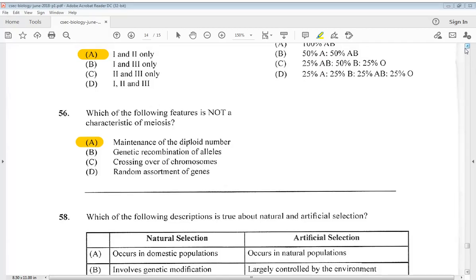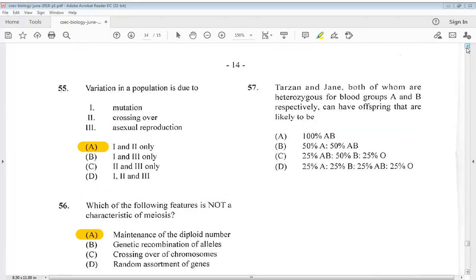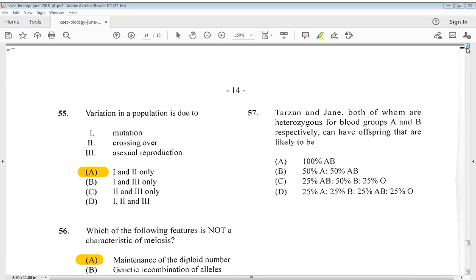Let's go to number 57. Tarzan and Jane, both of whom are heterozygous for blood groups A and B respectively, can have offspring that are likely to be. So it is D, 25% A, 25% B, 25% AB, 25% O.